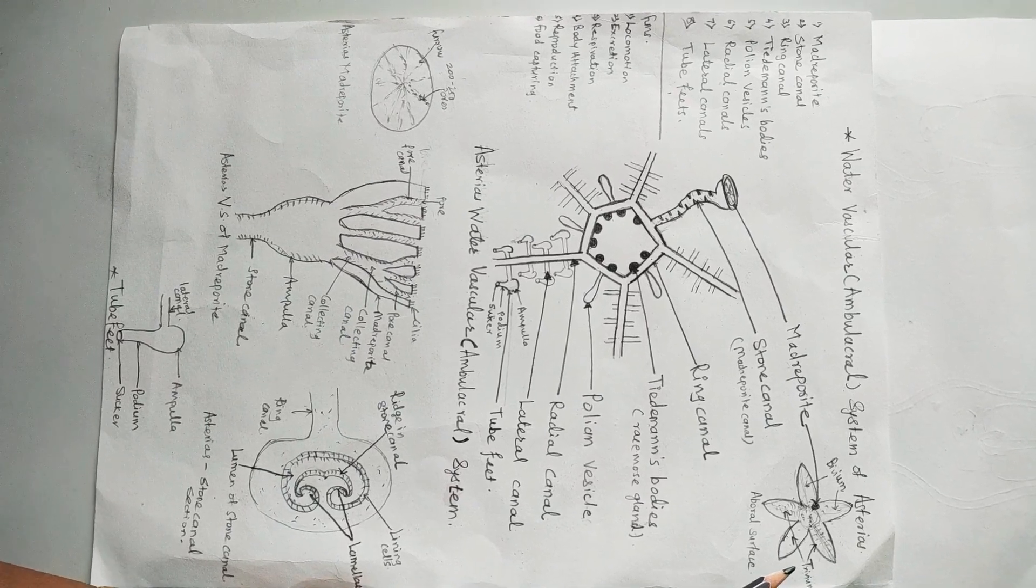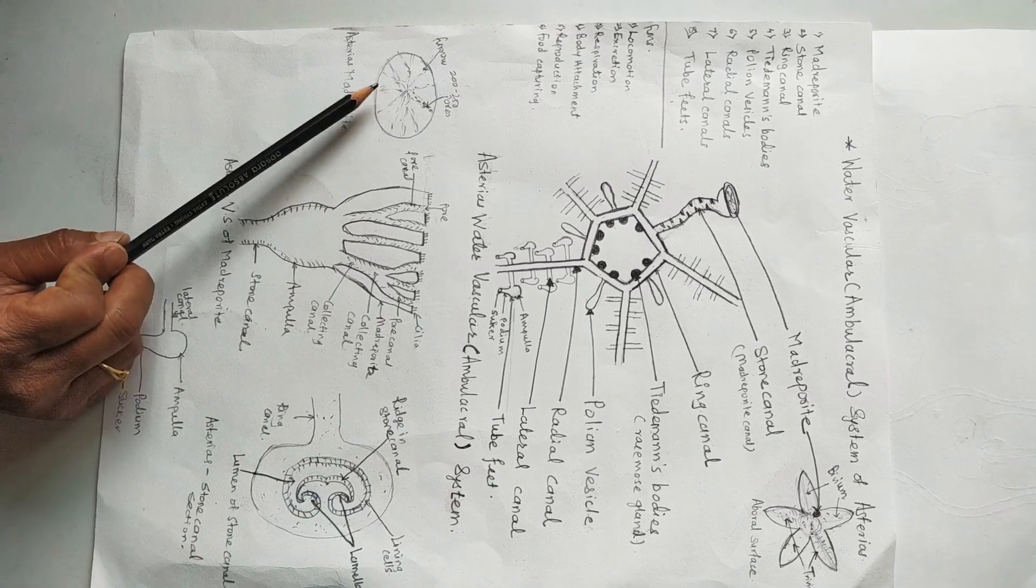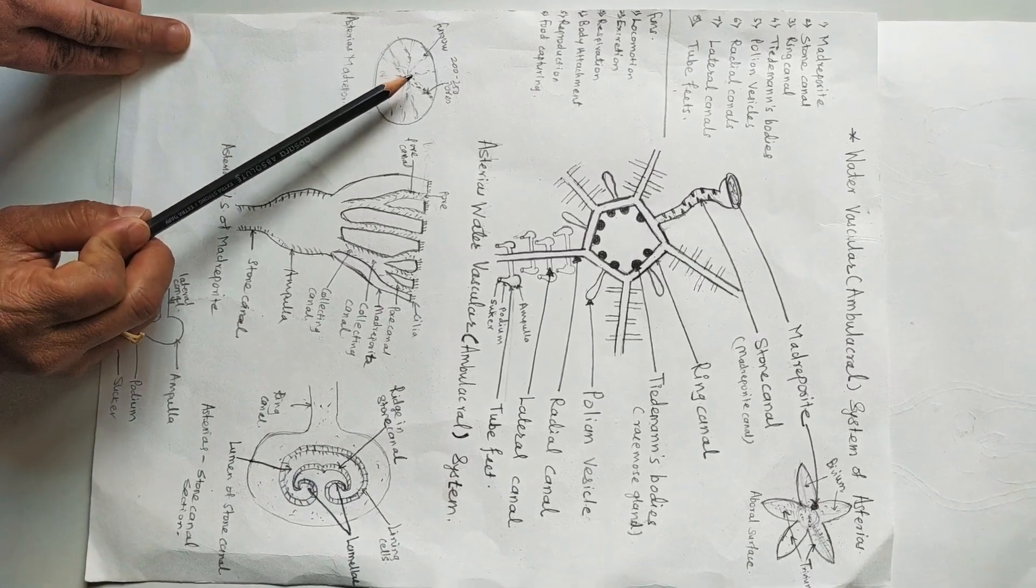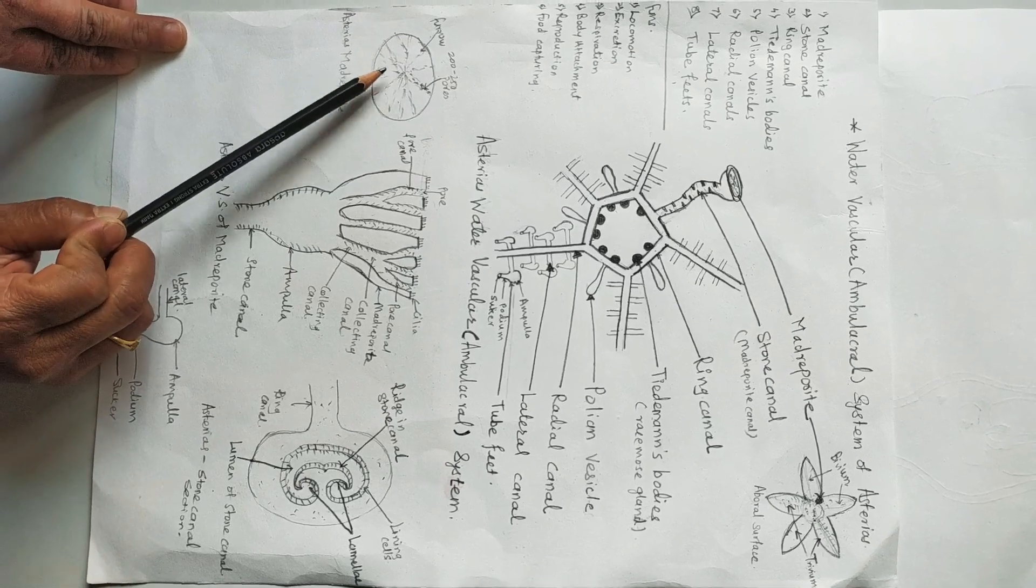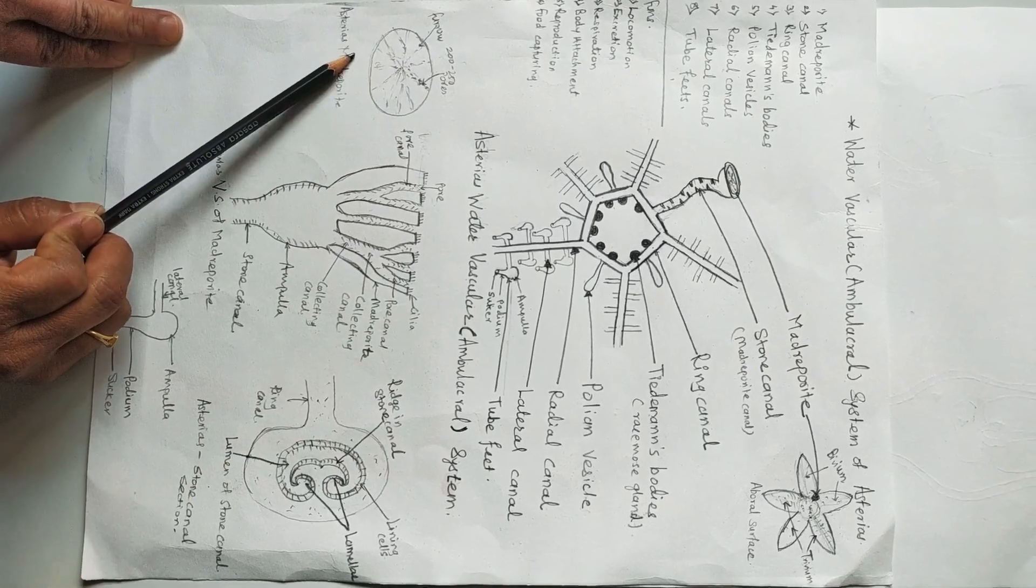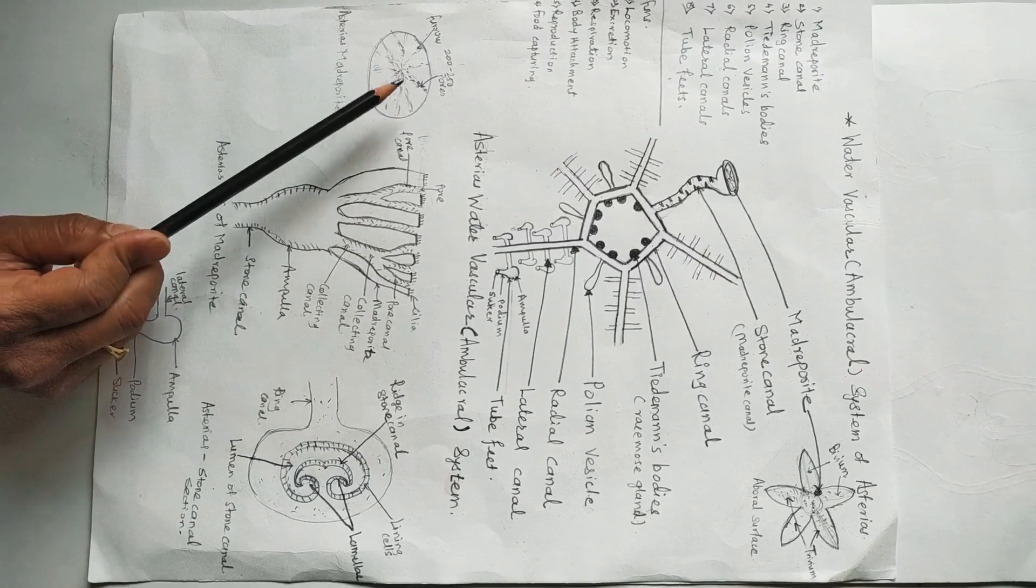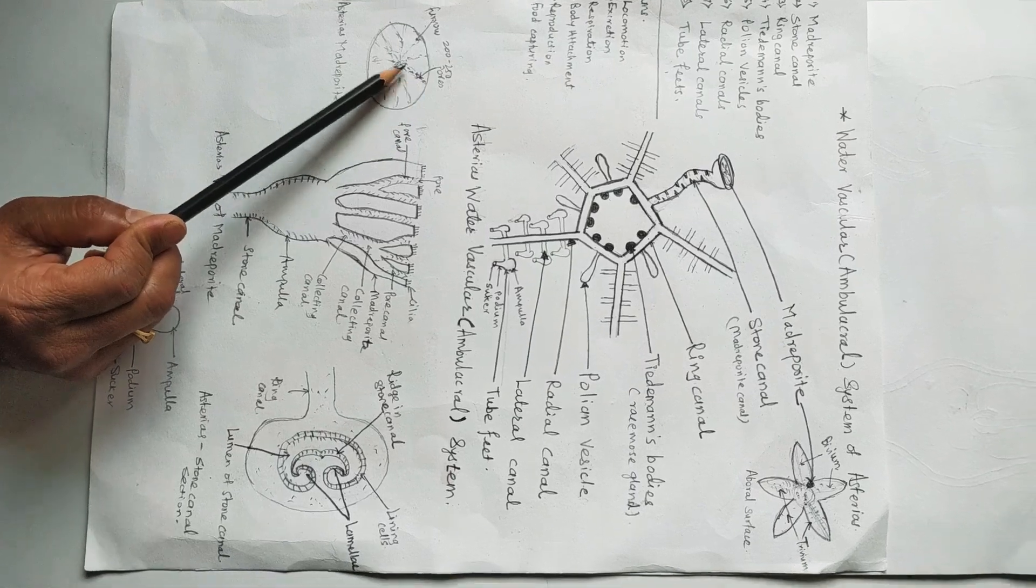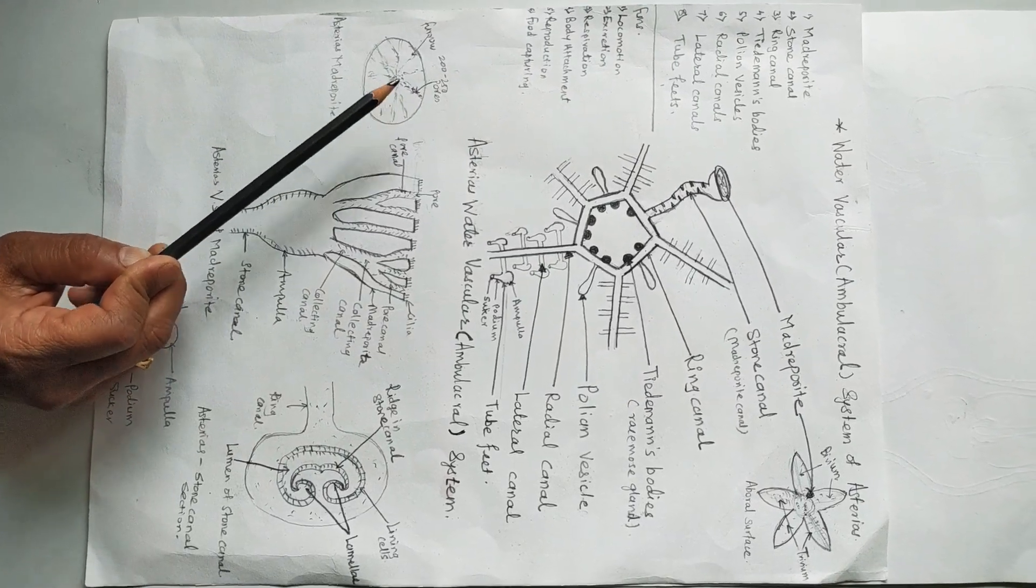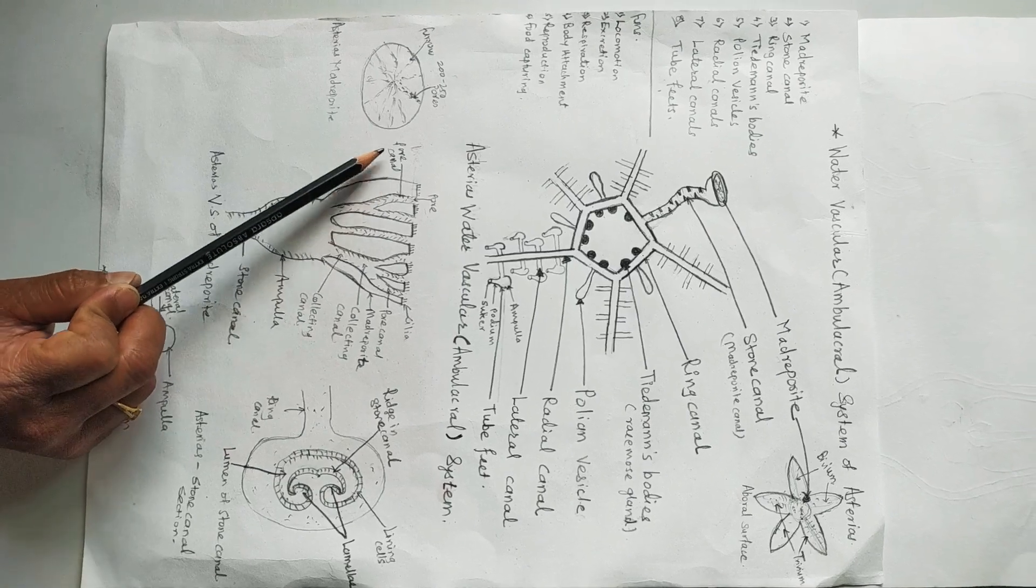Madreporite is situated on the aboral surface. That disc-like part consists of many ridges or many radiating grooves or furrows also having at their bottom minuscule pores. There are about 200 to 250 pores present in each furrow which lead into the short canal that is called a pore canal.